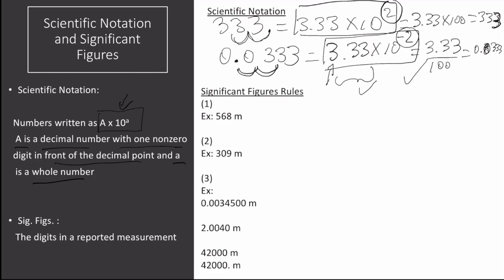Let's move on to significant figures. Significant figures are the digits in a reported measurement. Only numbers with units, or numbers that have been measured, are relevant in the calculation of significant figures. Numbers such as factors, whole numbers, divisors, and bases of logarithms are not significant because they don't come from a measurement.